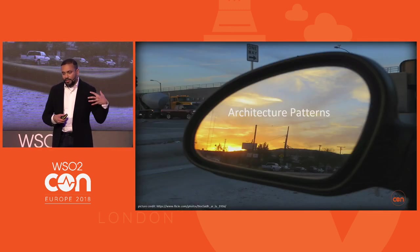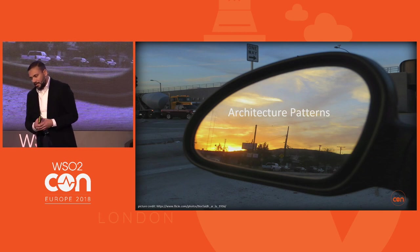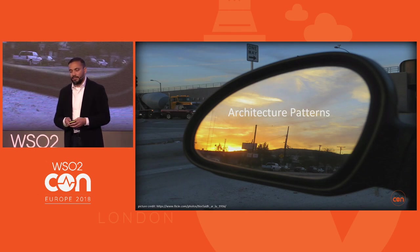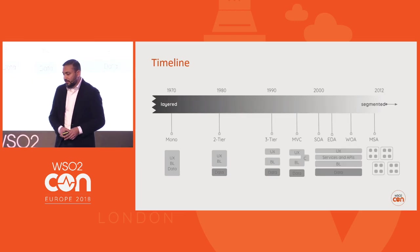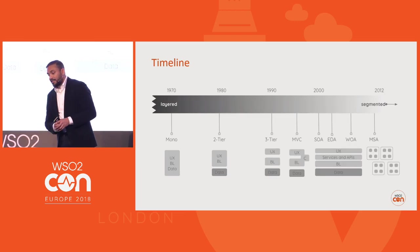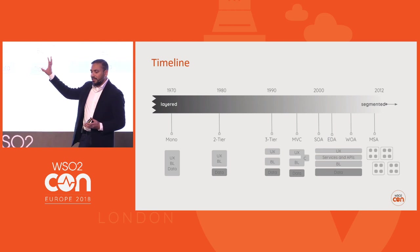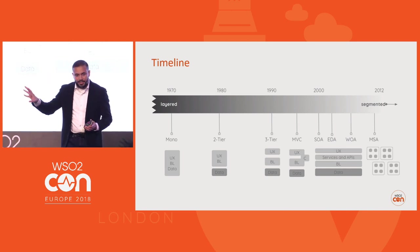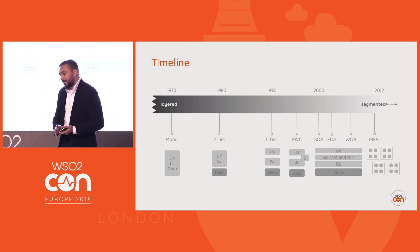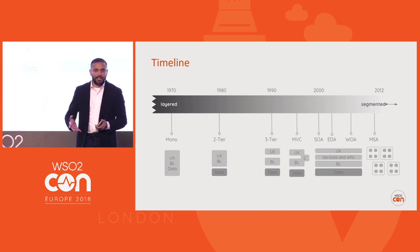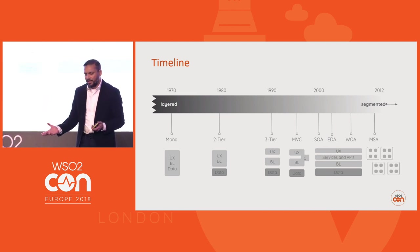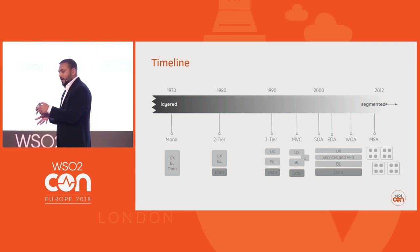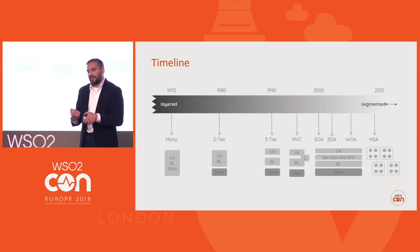Before jumping into the architecture pattern, let me look at the history — what patterns we've used so far. This is a timeline I drew. We started with a single monolithic architecture where the user interface, business logic, and data were bound together in one layer. Then it changed with database technologies, and the UI and business logic got separated from the data — that's the 2-tier architecture. Then came the 3-tier architecture.